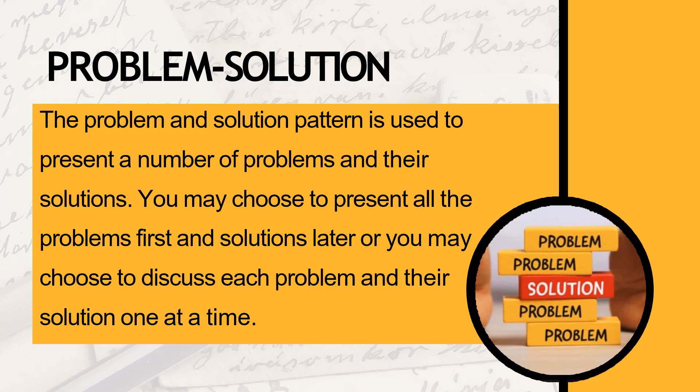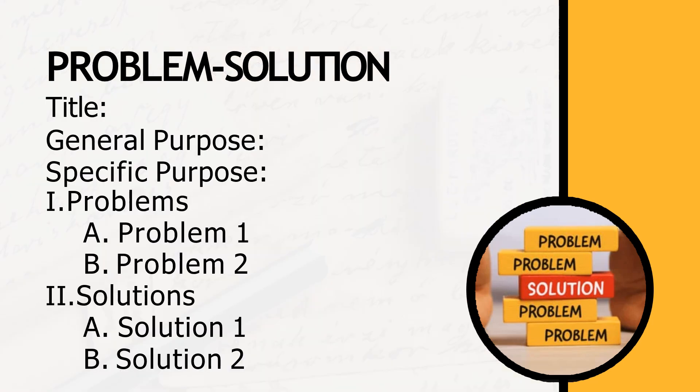Next we have the problem-solution pattern, used to present a number of problems and their solutions. You may choose to present all the problems first and solutions later, or discuss each problem and its solution one at a time — similar to the cause-and-effect pattern. This pattern is perfect for academic papers such as action research, research papers, and especially project proposals. In the outline, you prioritize problems first and then proceed with the solutions.